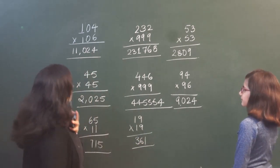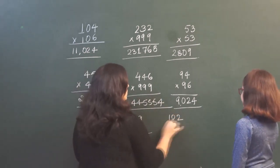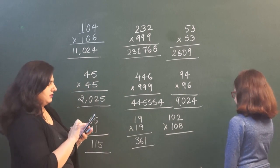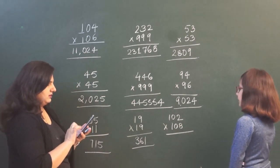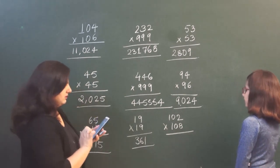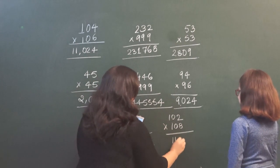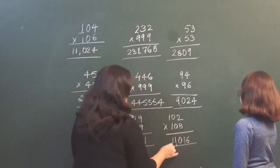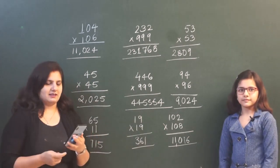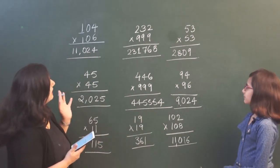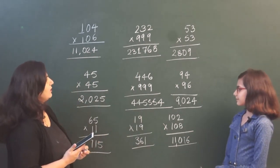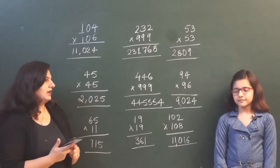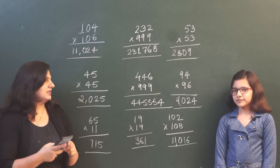102 × 108. The answer is 11016. Yes, that's correct — 11016. I can see you have done all the calculations very, very quickly, and these were the calculations using the Vedic Maths techniques.